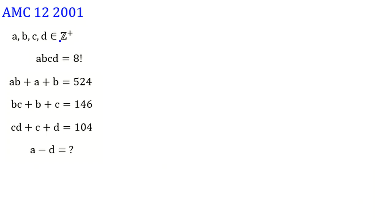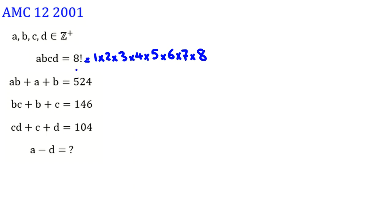A, B, C, D are positive integers. Their product is 8 factorial. 8 factorial is equal to 1 times 2 times 3 times 4 times 5 times 6 times 7 times 8 by the definition of 8 factorial. The given equations are: AB plus A plus B equals 54, BC plus B plus C equals 146, CD plus C plus D equals 104. A minus D is what we need to find.